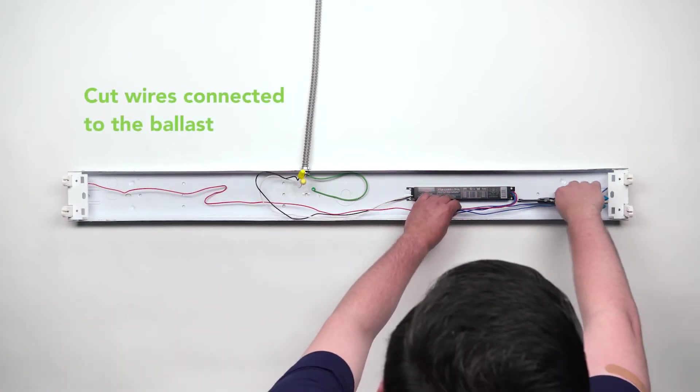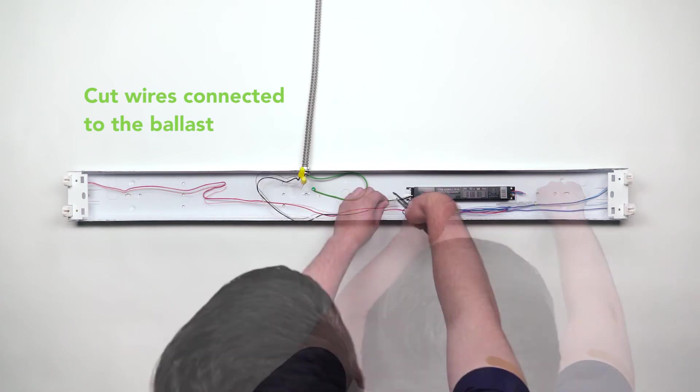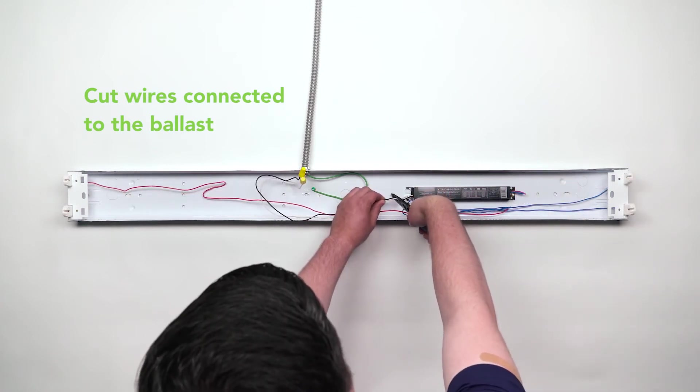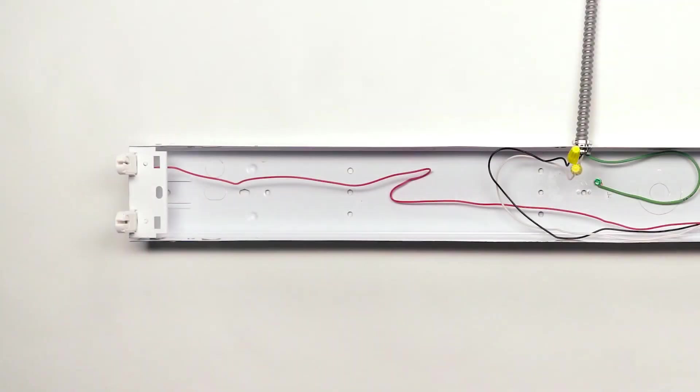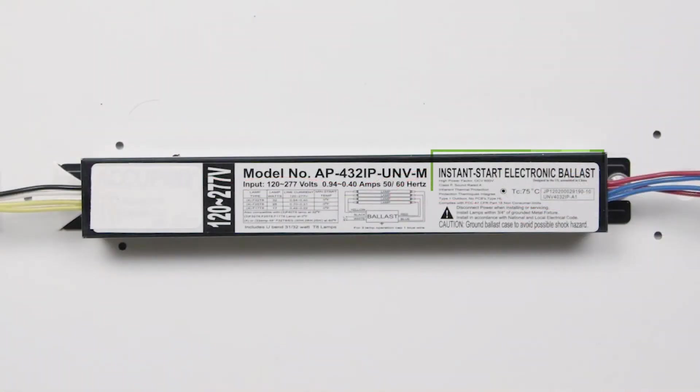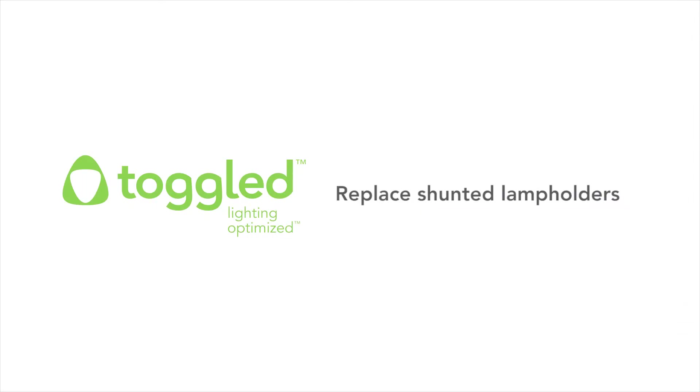Cut all wires connected to the existing ballast. Next, check for shunted lamp holders. Shunted lamp holders can be identified if only a single wire connects the lamp holder to the ballast, or if the ballast is marked Instant Start. Refer to the installation guide for additional details. If it's determined necessary to replace shunted lamp holders, follow these easy steps.